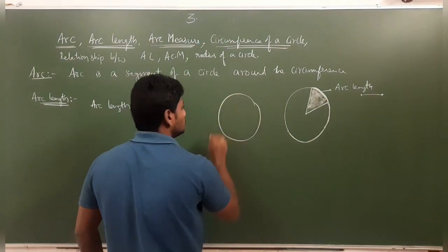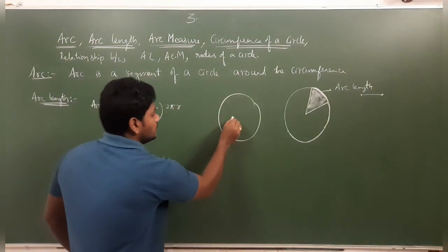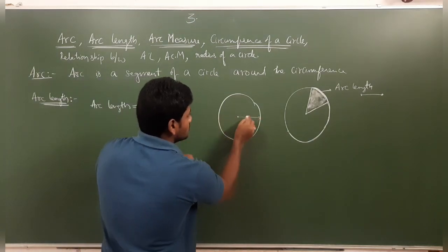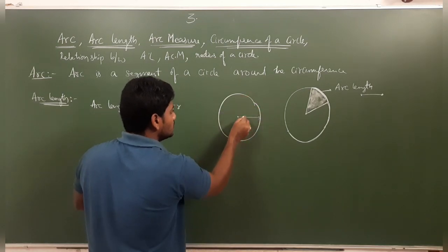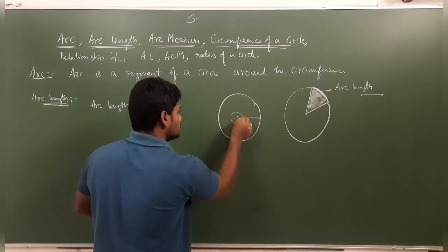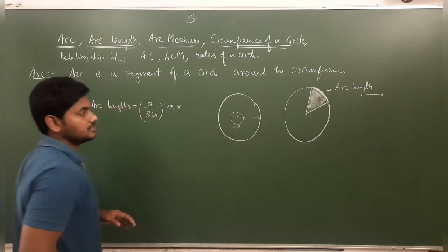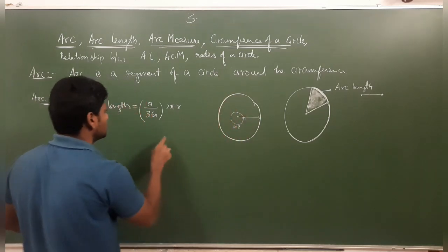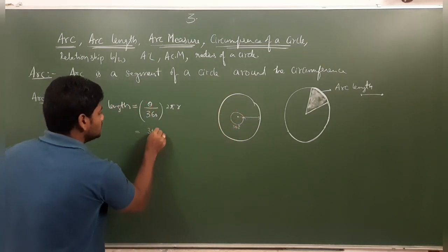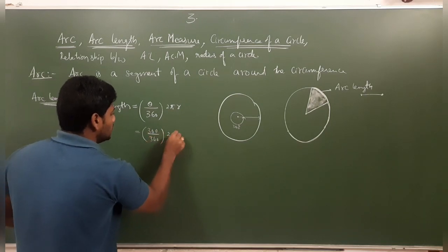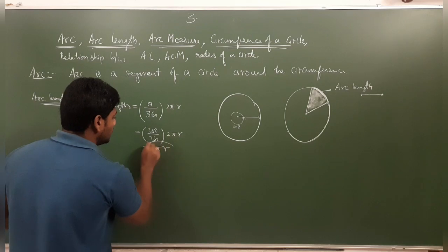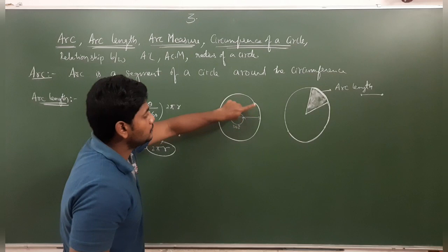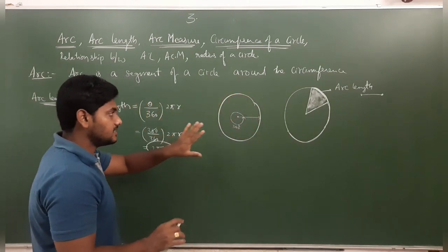For example, if θ = 360 degrees (a full circle), then L = 360/360 × 2πr = 2πr, which is the circumference of the circle. If θ = 60 degrees, L = 60/360 × 2πr. If θ = 90 degrees, L = 90/360 × 2πr. The arc length changes based on the value of θ. This formula is in terms of degrees.